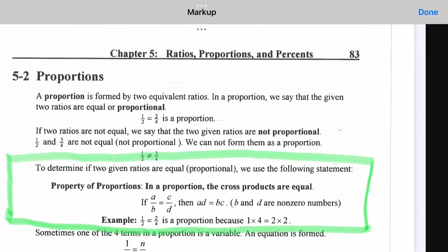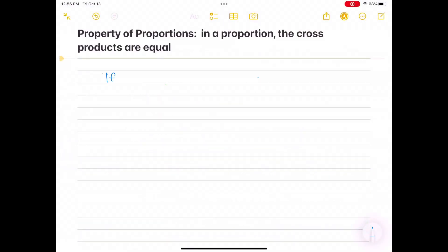To determine if two given ratios are equal or proportional, we use the following statement: Property of Proportions. In a proportion, the cross-products are equal. If A over B equals C over D, then A times D equals B times C. B and D in the denominators are non-zero numbers.